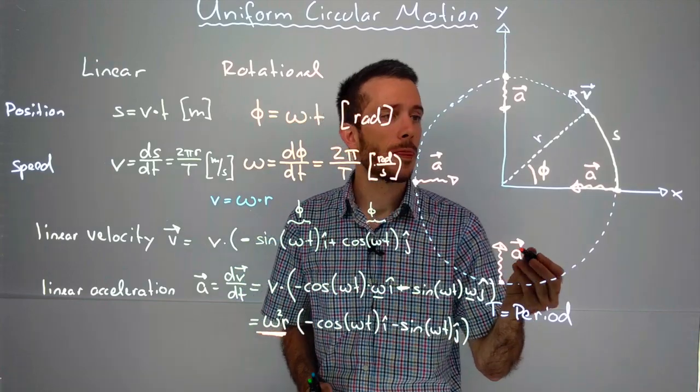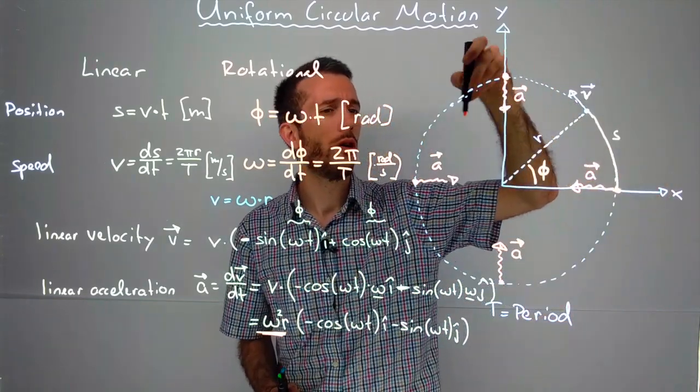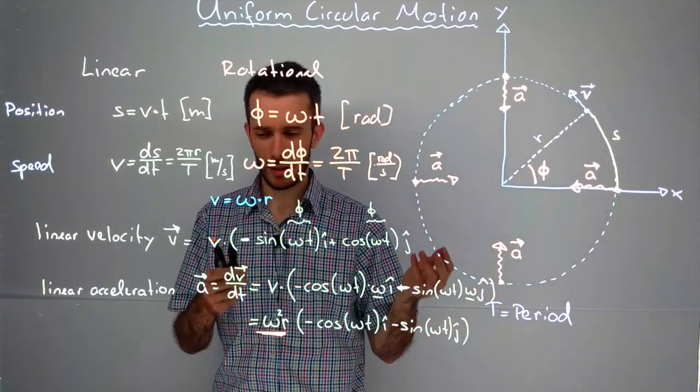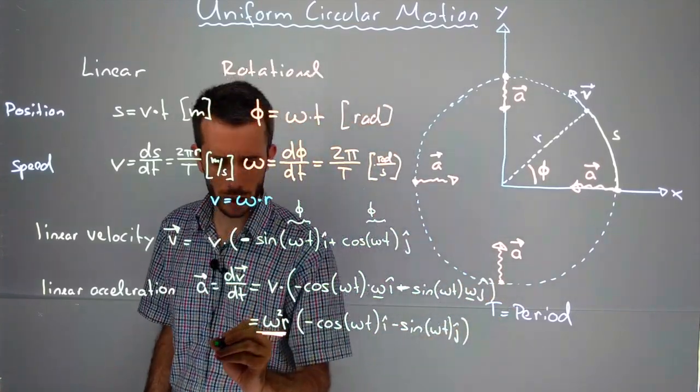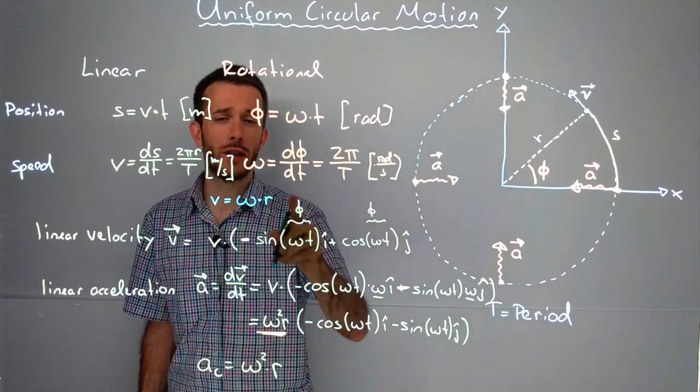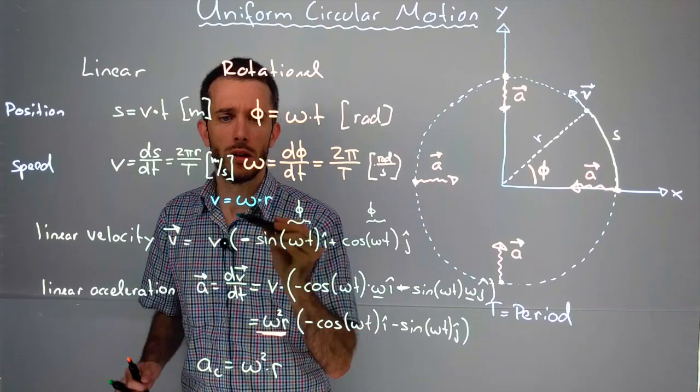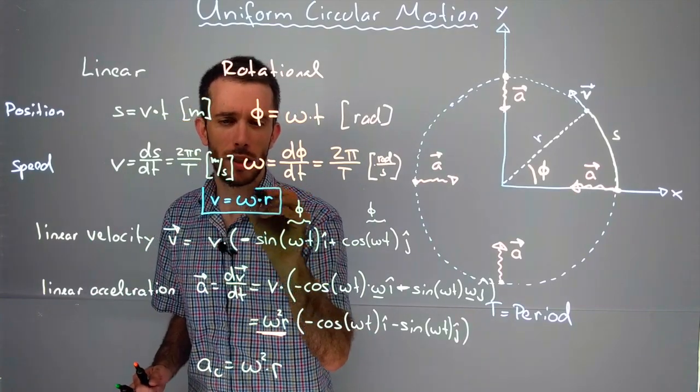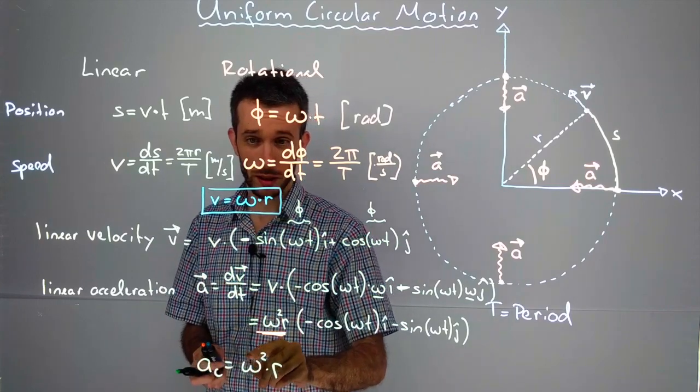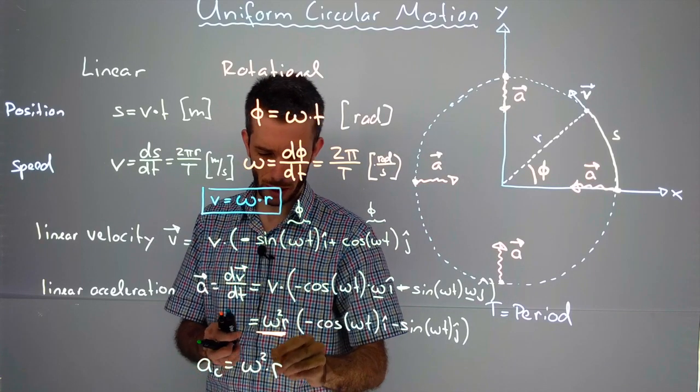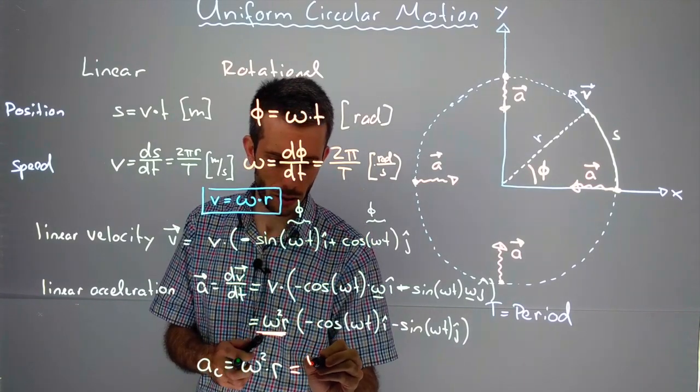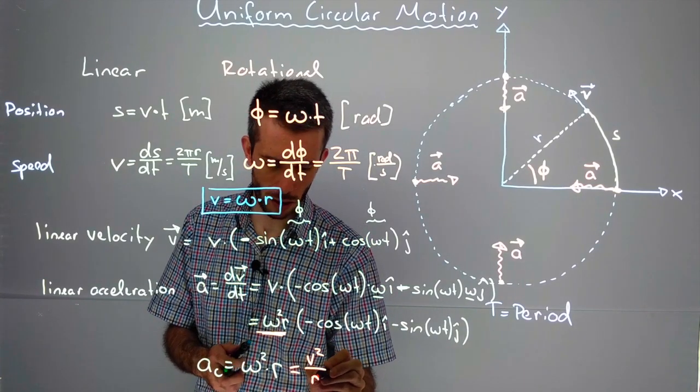So the acceleration that we have is always pointing to the center of the circle. This is also what we call the centripetal acceleration, of which the magnitude must be ω² times r, which, if I plug in this equation here for ω, gives me v² over r² times r², so that will give me v² over r.